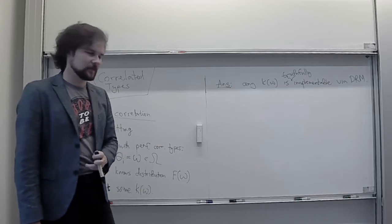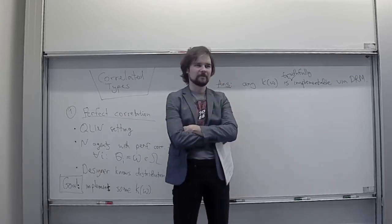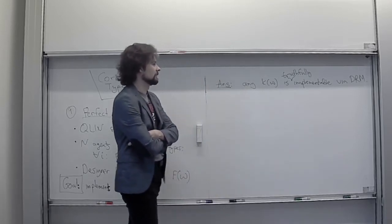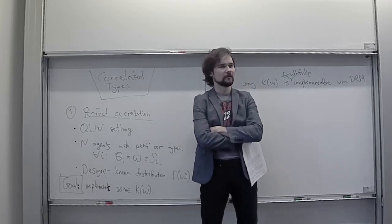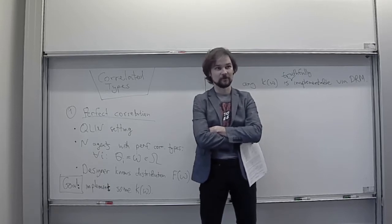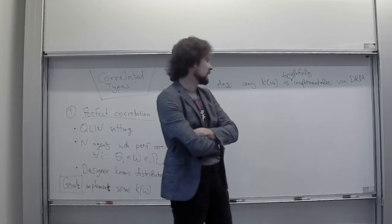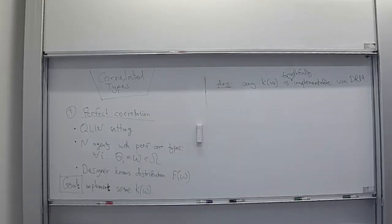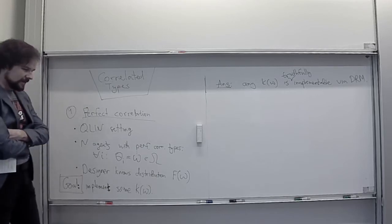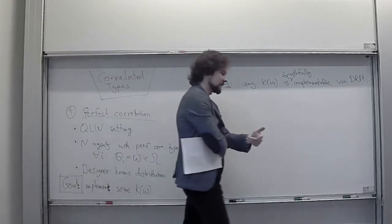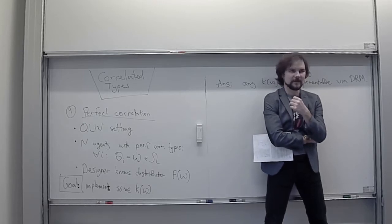A question to all of you: if you don't know the answer yet, can you try to guess — how can we implement this allocation k? What kind of transfer rule as a function of players' reports could we have that would implement k of omega? Let's talk about Bayesian implementation. Since our agents have perfectly correlated types and they cannot cooperate explicitly — they cannot collude, at least under our assumption — then as soon as we the designer see that not all reports coincide, we know that at least somebody is lying.